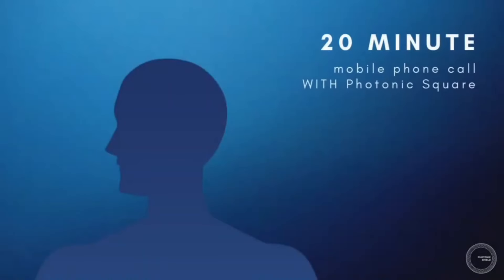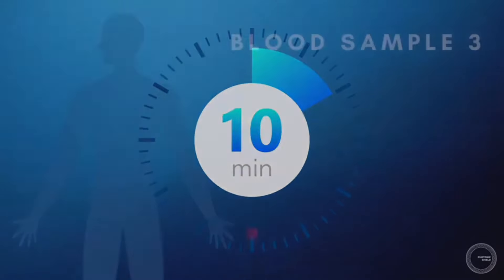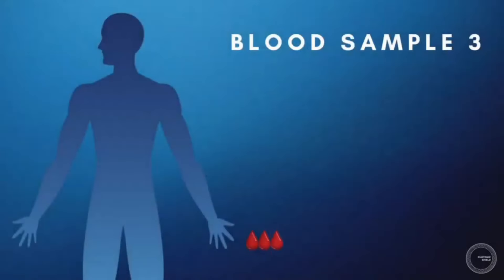30 minutes later, the test subject made a second 20 minute mobile phone call, with the phone placed directly to the ear. However, this time the photonic square had been applied to the device. 10 minutes later, a third blood sample was taken.